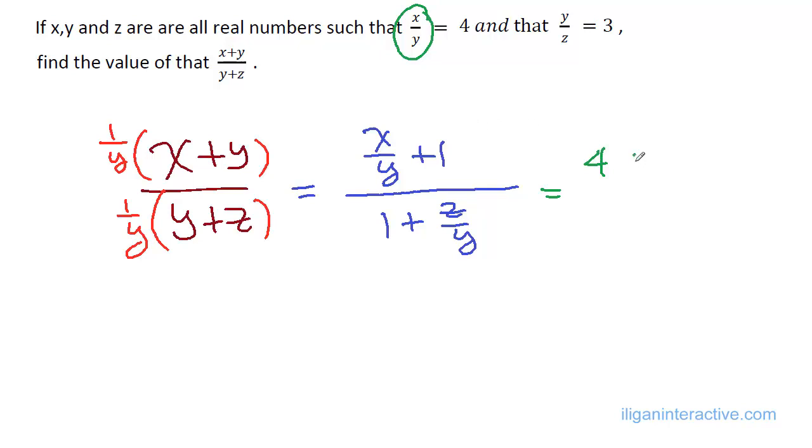And of course, 4 plus 1 in the numerator, and the denominator will just be 1 plus, what is z over y? Well, it's not really given. But y over z is 3, which means the reciprocal of that, z over y, will just be 1 third. So this thing here will just be 1 third.